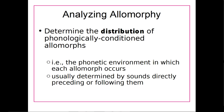Hi everyone. As promised, this is the next video where we'll be looking at how we determine the distribution of allomorphs. This is an example of how the phonetic environment can help us decide which allomorph of a morpheme is going to occur. This is usually determined by the sounds that directly precede or follow something, just like we saw with phonology.